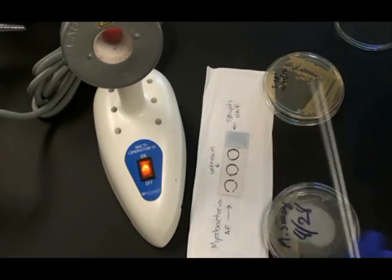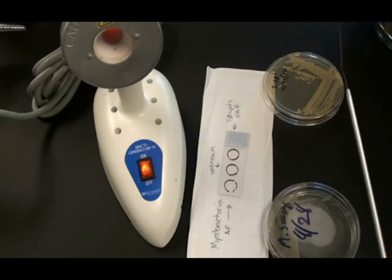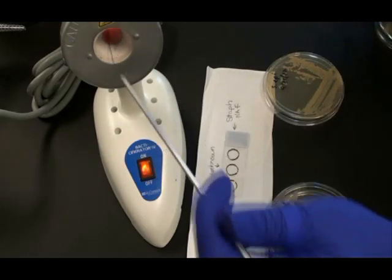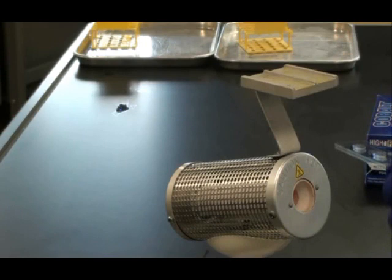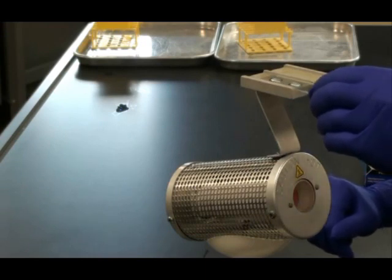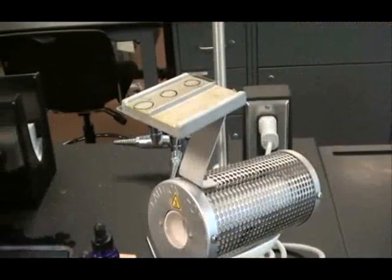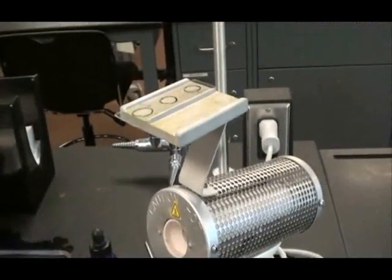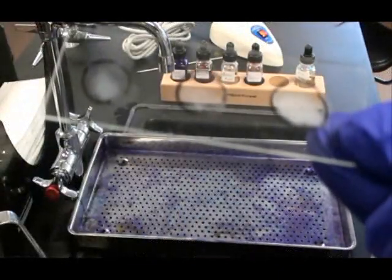Then I am going to sterilize my loop one last time. It's now time to heat-fix my bacterial smear. Now that my slide is all prepared, I am going to put it on the platform on top of the micro-incinerator. That will deliver heat that will kill the bacteria and stick it to the slide. When my slide is heat-fixed and ready for staining, those droplets of water will be completely evaporated, usually about five minutes.